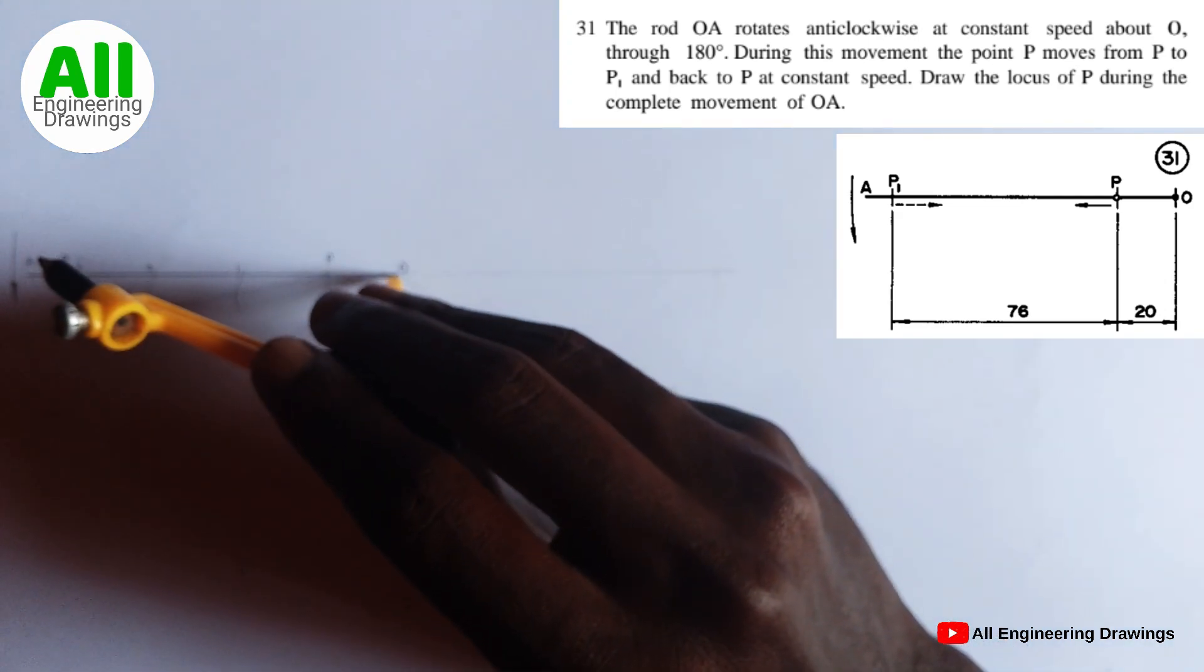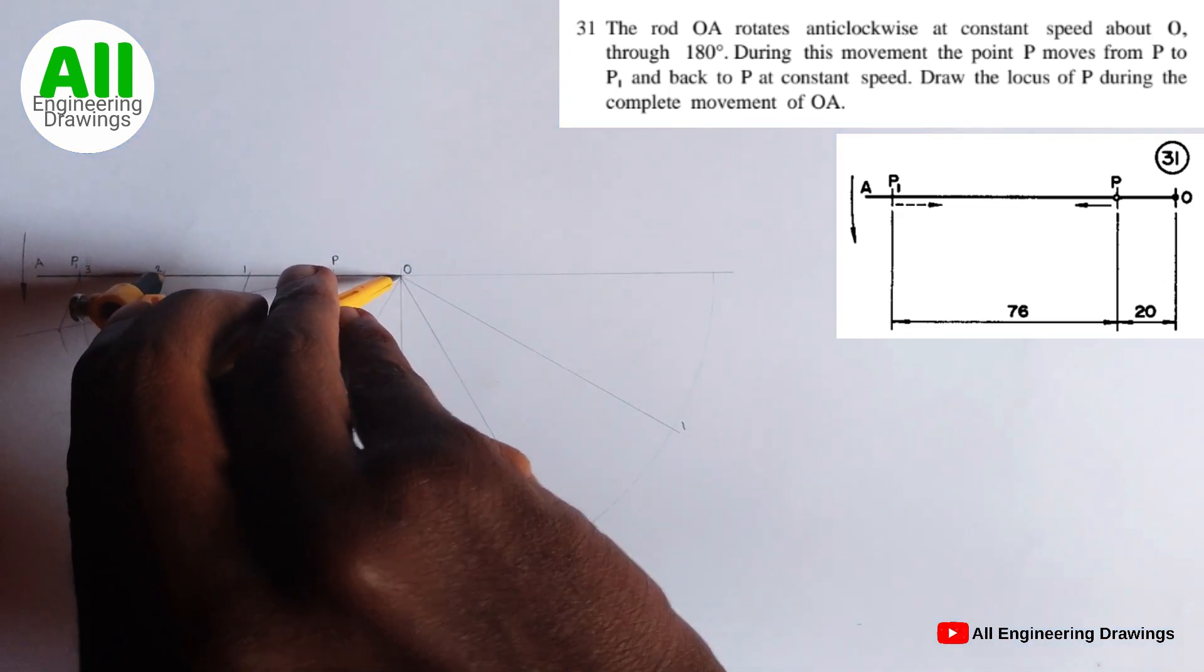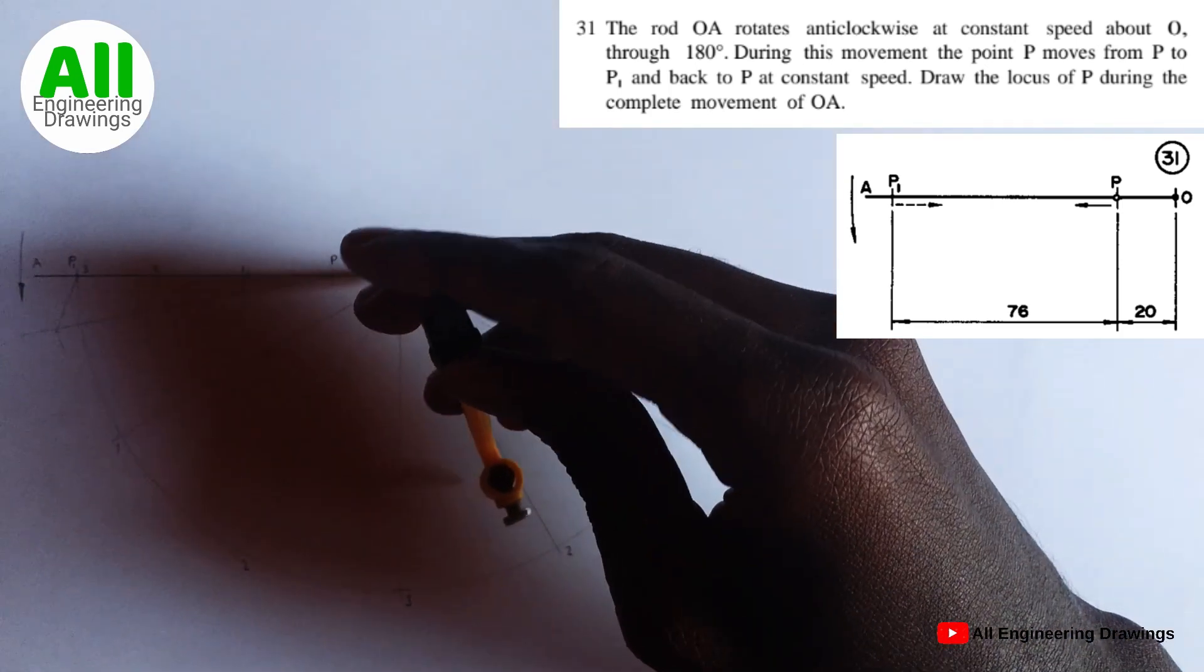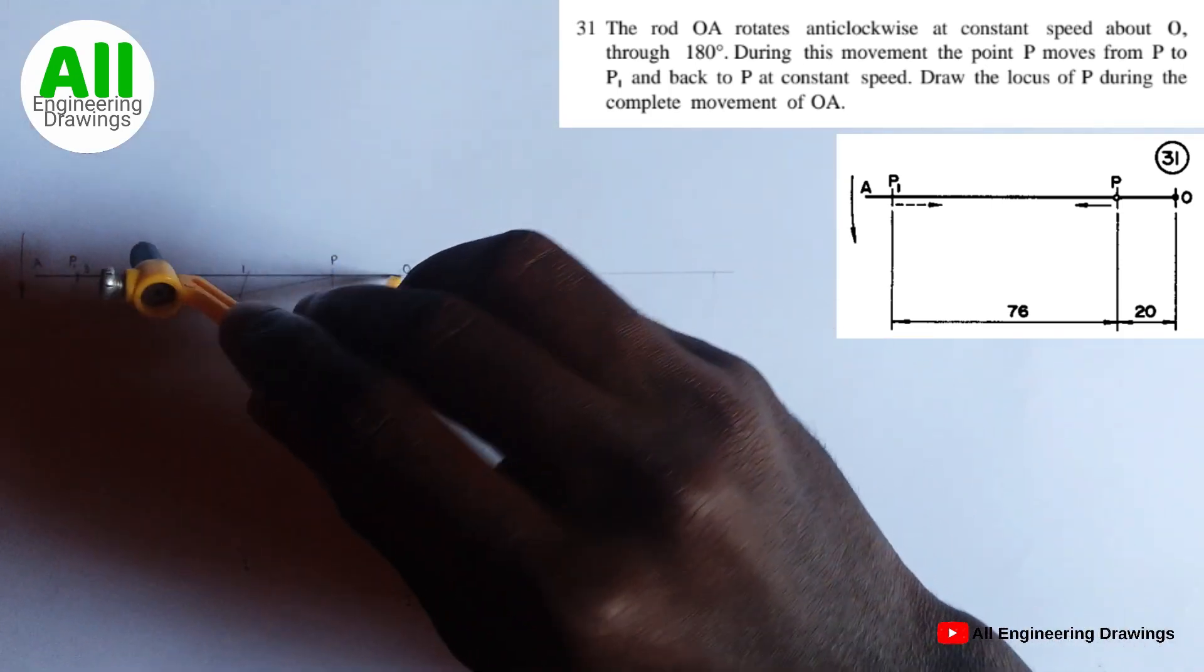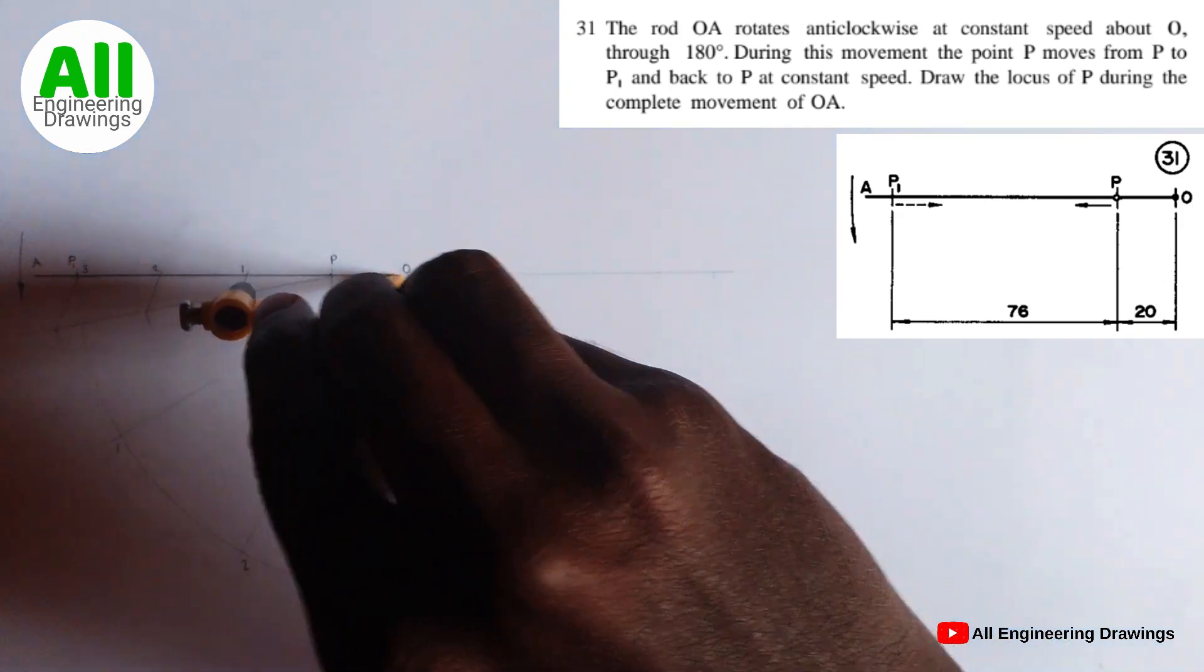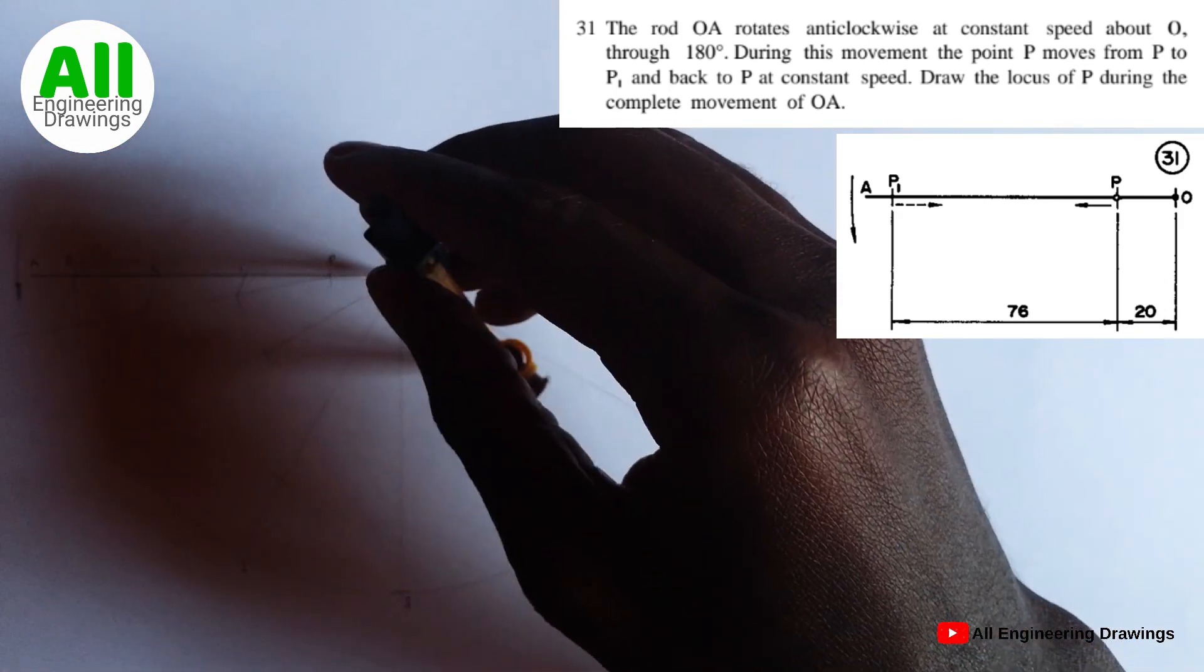Next, adjust the compass to point 2. Then cut an arc on your line 2 here, then adjust the compass to point 1, then cut an arc on your line 1.